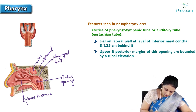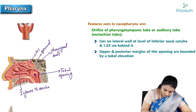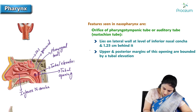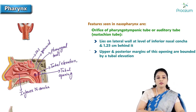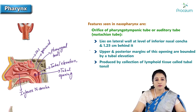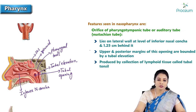The upper and posterior margins of this opening are bounded by an elevation called the tubal elevation. You can see an elevation around it. Tubal elevation is produced by the collection of lymphoid tissue called the tubal tonsil.